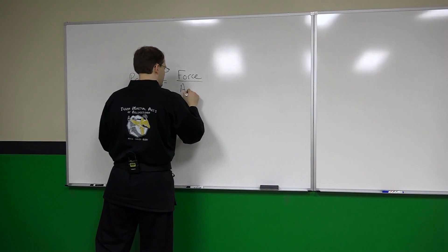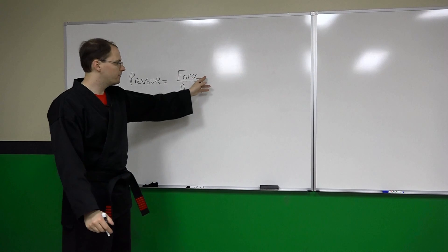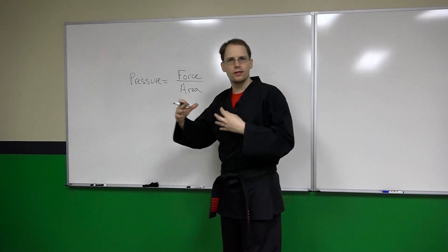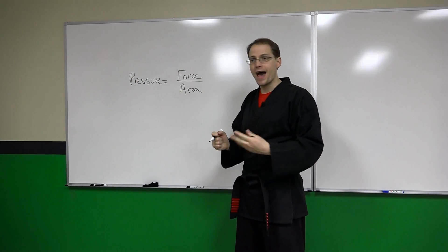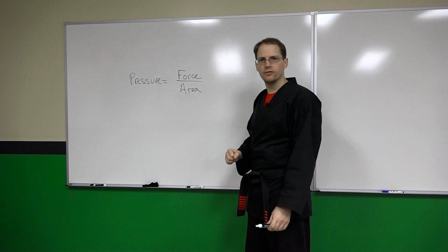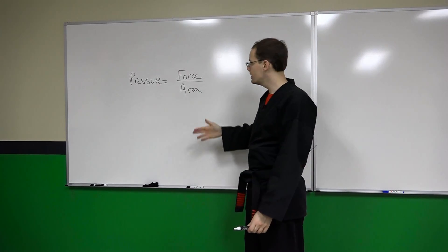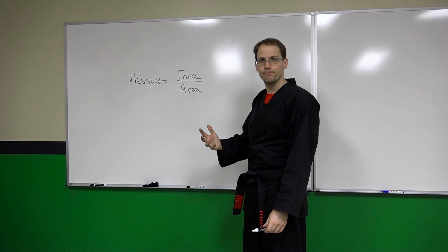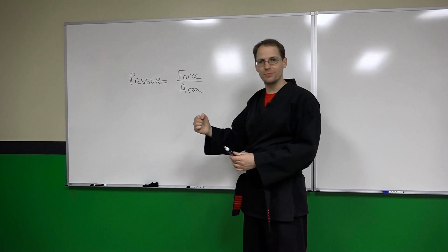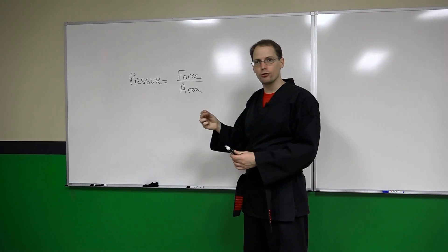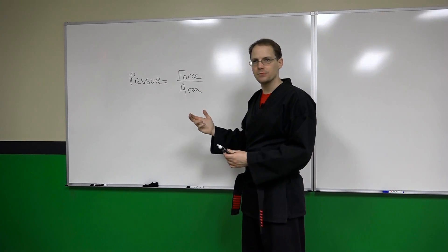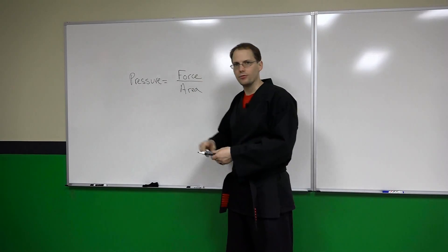Pressure is force per unit area. If the force is constant — something we've already established based on the conditions prior to the collision, prior to our impact with our opponent — we have control over the area over which we're delivering that force by our choice of weapons. So it's important to choose the appropriate weapon, not just so that it fits the target at hand — you wouldn't try to punch somebody in the eye — but also so that you can deliver an impact over as small an area as possible, causing as much damage as possible by increasing the pressure.